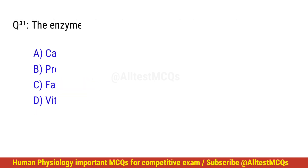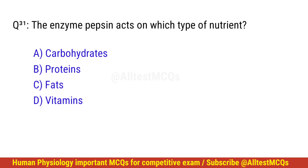Question number 31. The enzyme pepsin acts on which type of nutrient? The correct option is B: Proteins.